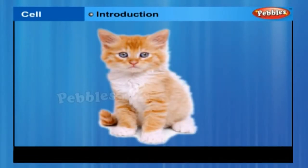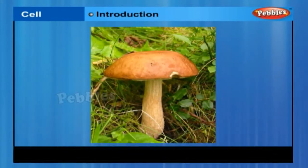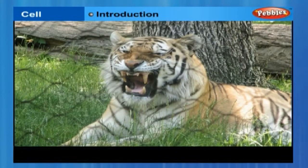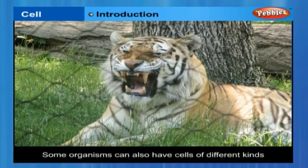On the other hand, many cells group together in a single body and assume different functions in it to form various body parts in multicellular organisms. Multi meaning many, such as some fungi, plants and animals. Every multicellular organism has come from a single cell. Some organisms can also have cells of different kinds.